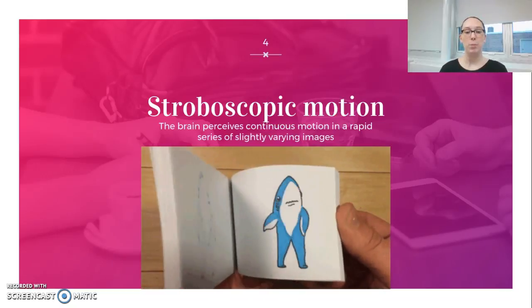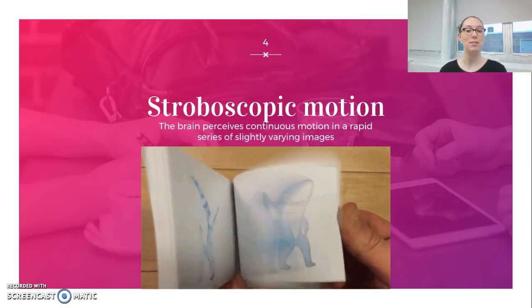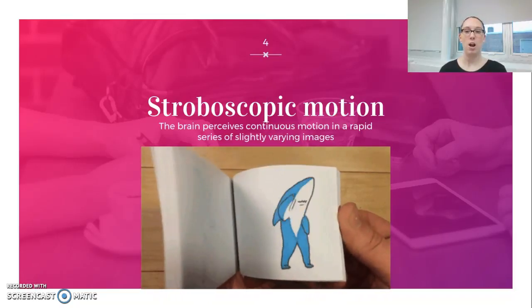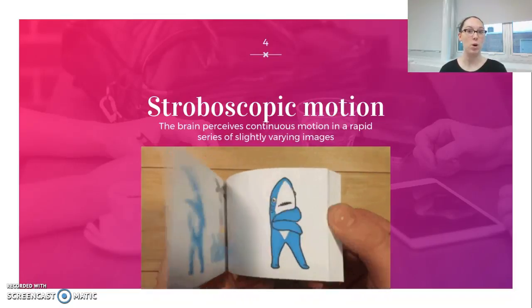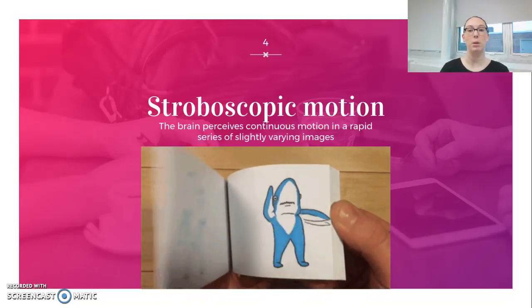It's when the brain is going to perceive continuous motion in a rapid series of slightly varying images. And you've experienced this in a very low-tech way if you've ever played with a flip book or if you've made one yourself. You are creating the illusion of movement by using stroboscopic motion.